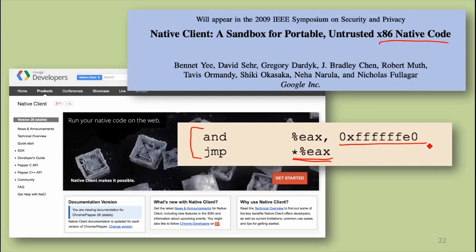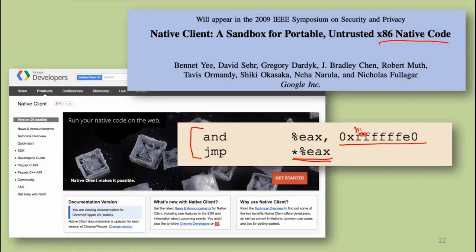It's ANDing the jump target with a hex mask. What is that hex value? All those F's are all ones, and then there are some zeros at the end. When you AND a value with all-ones bits, those bits are kept unchanged. The zeros at the end force those bits to zero — whatever was in the original value. This forces all jumps to be aligned, meaning you can only jump to locations that end in all those zeros. That makes it much easier to analyze the code and verify you're not jumping around safety checks. You can only jump to these aligned, safe locations.